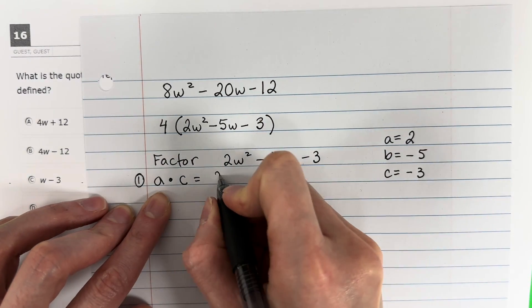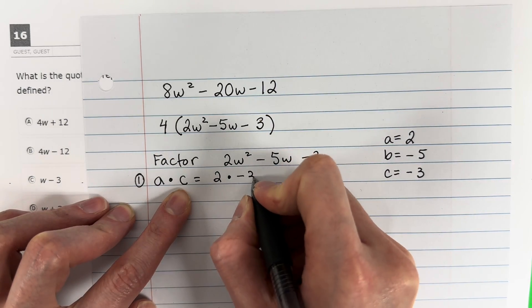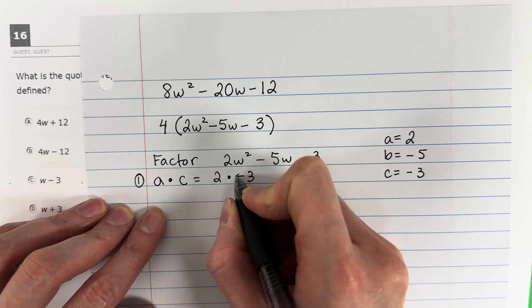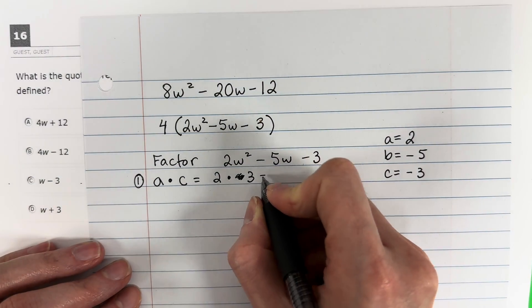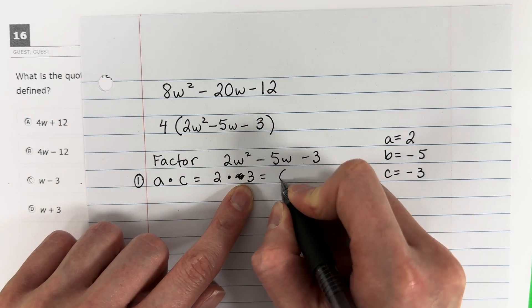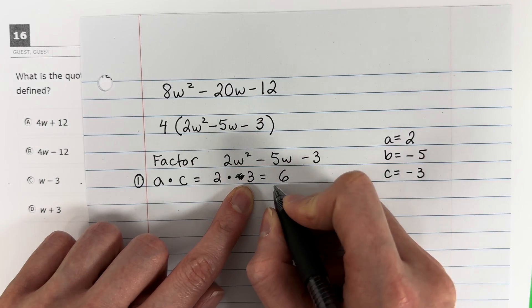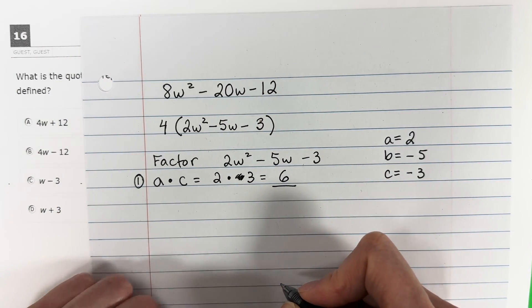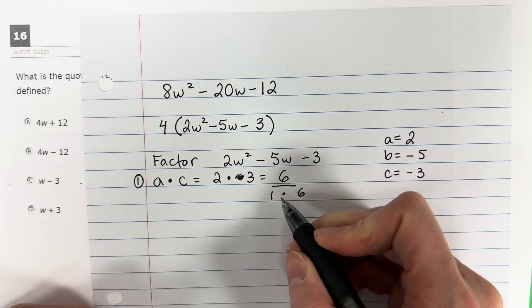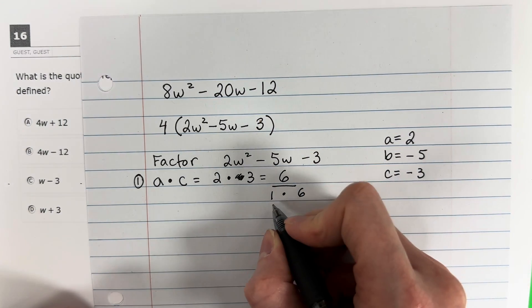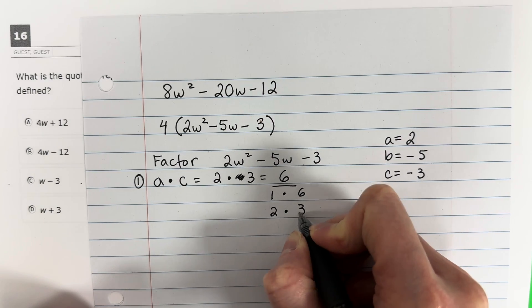A is 2 times C is negative 3, but you're not going to use the negative. You're going to ignore the signs right now. So 2 times 3 is 6. We're going to find the factors of 6. To get 6, I can do 1 times 6. You always start with 1. After 1 is 2, 2 times 3 is 6. After 2 is 3, but I already have 3.